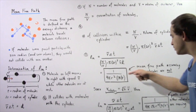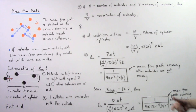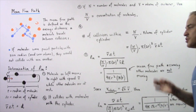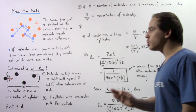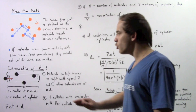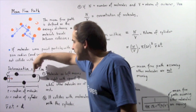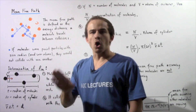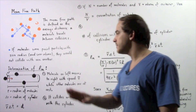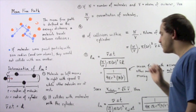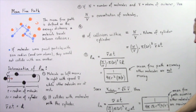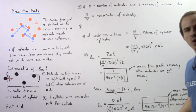So we have two different equations. One equation works as long as we assume the other molecules are stationary, but if they are moving we must use the equation with the radical-2 factor.